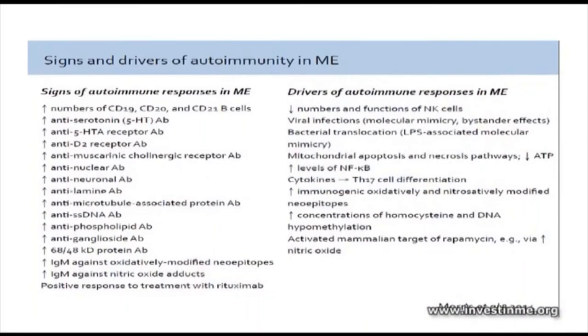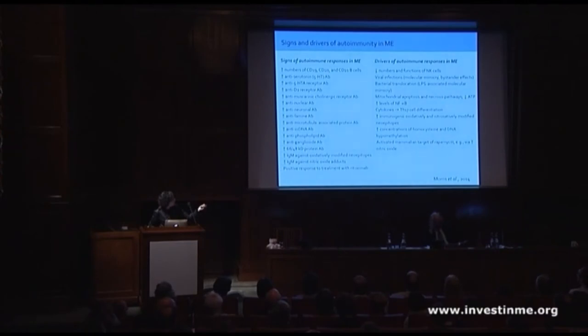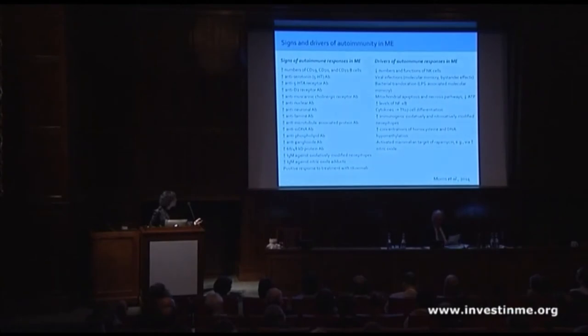Why do we think about ME and autoantibodies in an autoimmune process? There are many clues — taken from a recent paper by Morris and Michael Maes's group. There are a variety of neuroautoantibodies that have been detected. We also have clinical treatment response — patients got better with rituximab — and we have a variety of viral and bacterial agents that could, through a process of molecular mimicry, look like something that is already in your body as a natural self-protein. There are many reasons to believe this may be the case.